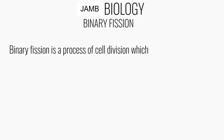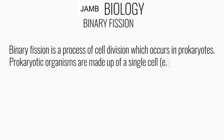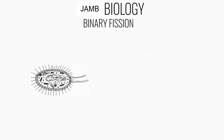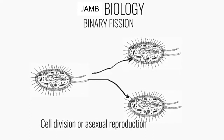Binary fission is a process of cell division which occurs in prokaryotic organisms. Prokaryotic organisms are single-celled organisms — they have just a single cell. If prokaryotic organisms divide and yield two daughter cells, it means two new individual organisms are being produced. So we can refer to binary fission as a process of cell division or a process of asexual reproduction.